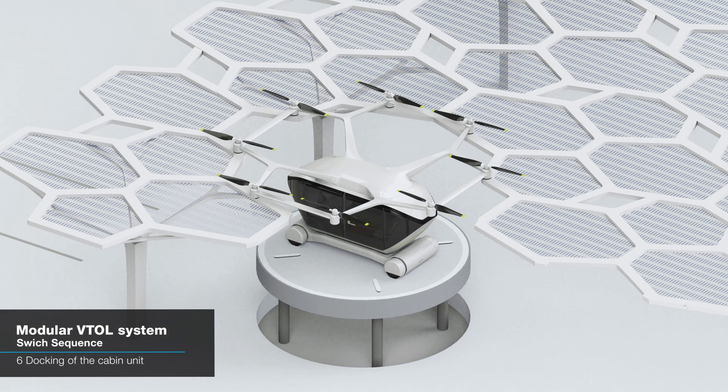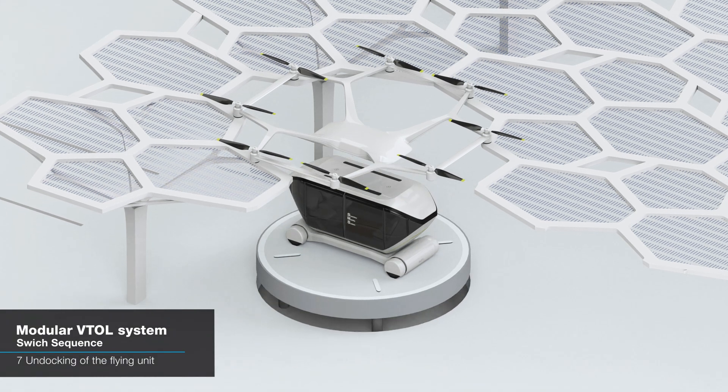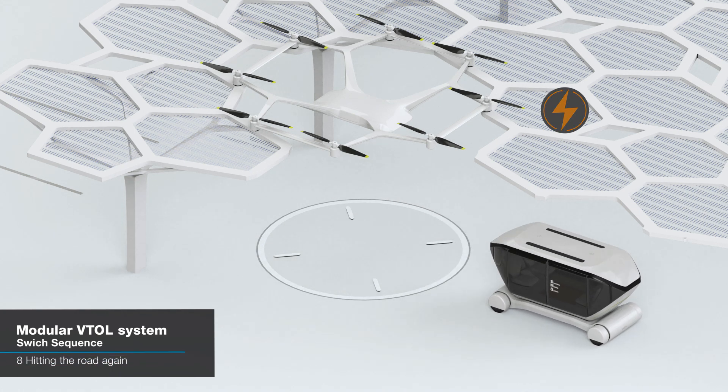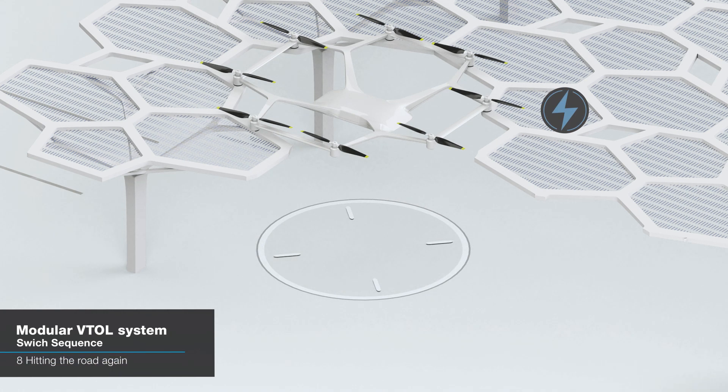After the propeller unit is separated, the pod bus goes down to the V-port, while the separated propeller unit is charged by the smart pergola.